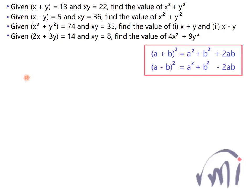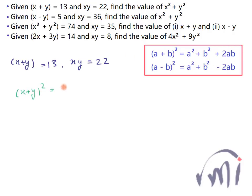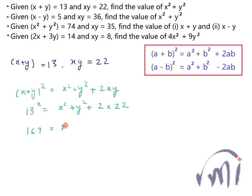In the first question we are given that x plus y is equal to 13 and xy is equal to 22, and we have to find the value of x squared plus y squared. If I substitute a as x and b as y in the first formula and square it, x plus y whole square will be written as x squared plus y squared plus 2 times xy. The value of x plus y is 13, so 13 squared equals 169, which equals x squared plus y squared plus 2 times 22, which is 44. So x squared plus y squared will be equal to 169 minus 44, which is 125.